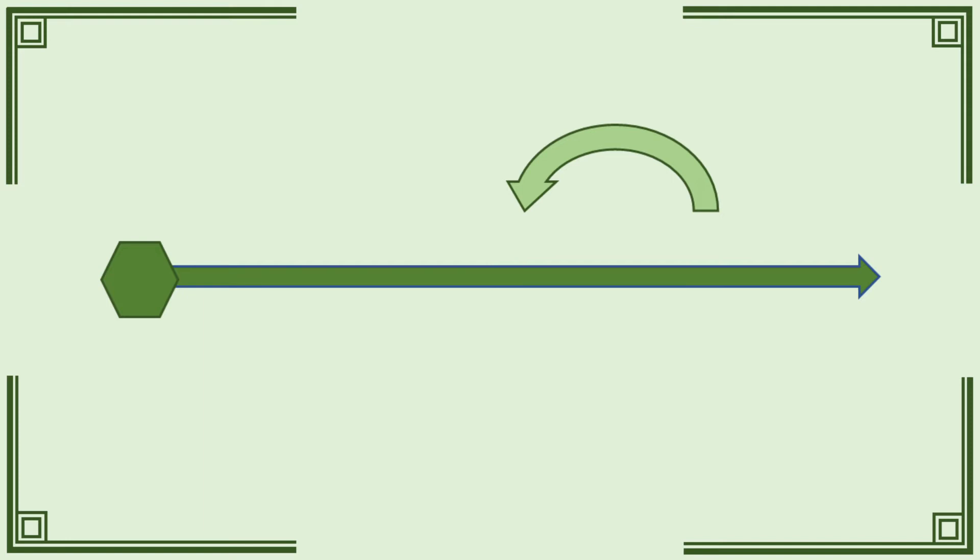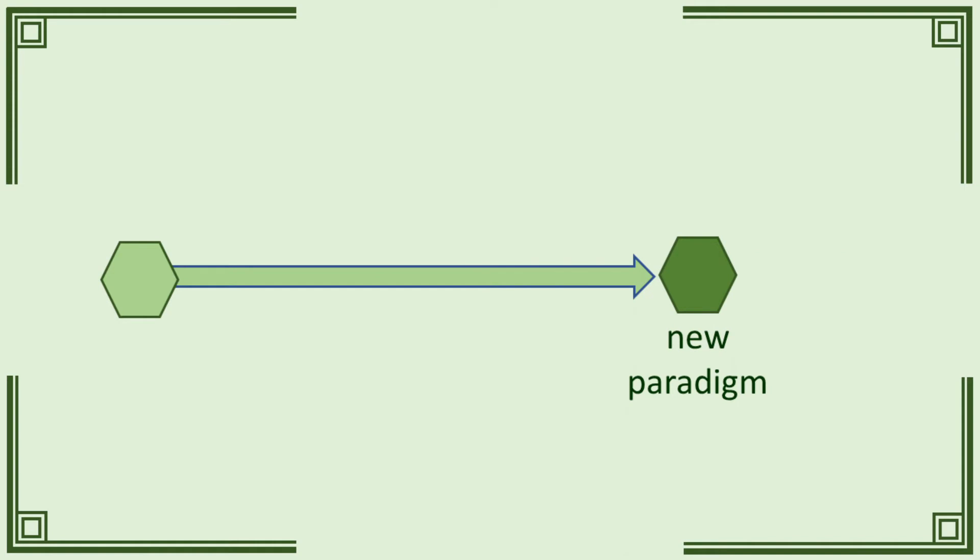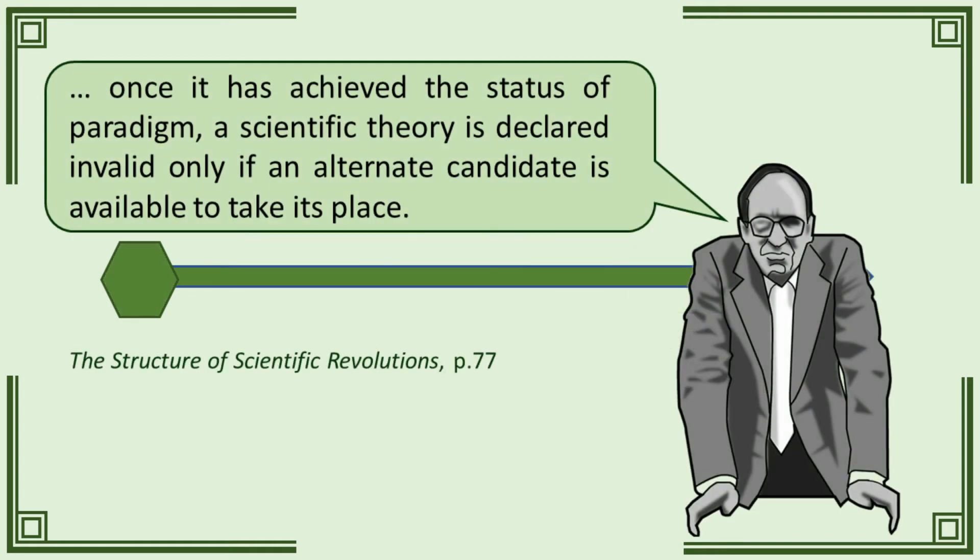The main concern is scientific revolution. Scientific revolution, or paradigm shift, means the abandonment of the old paradigm and the adoption of a new one. And that is a key point Kuhn makes. Once it has achieved the status of a paradigm, a scientific theory is declared invalid only if an alternate candidate is available to take its place.